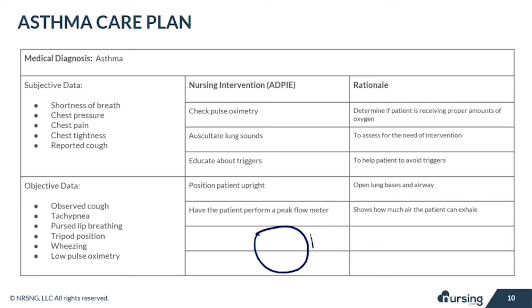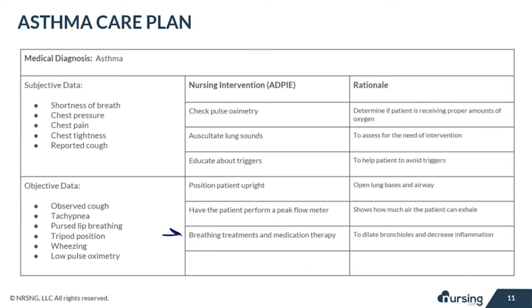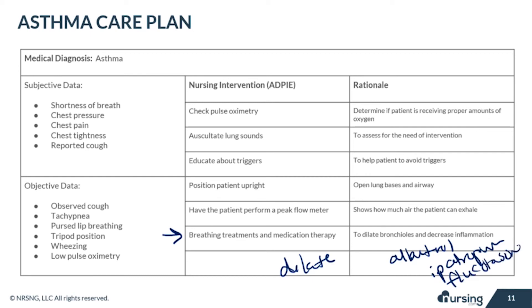Have your patient perform a peak flow monitor. This is going to help show how much air the patient can exhale — the smaller the number, the less air that the patient is moving. You will administer breathing treatments and medications as appropriate to help dilate the bronchioles and decrease inflammation. Beta agonists, such as albuterol, are used to help open up those lungs. Anticholinergics, such as ipratropium, help to relax those bronchospasms. Corticosteroids, such as fluticasone, are going to help decrease the inflammation in the lungs.